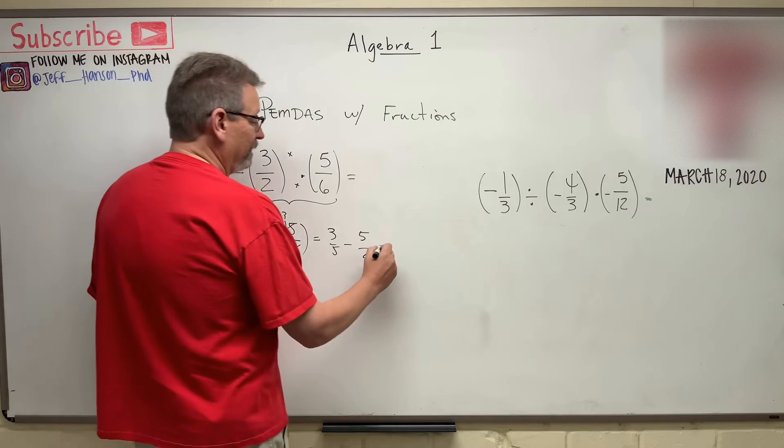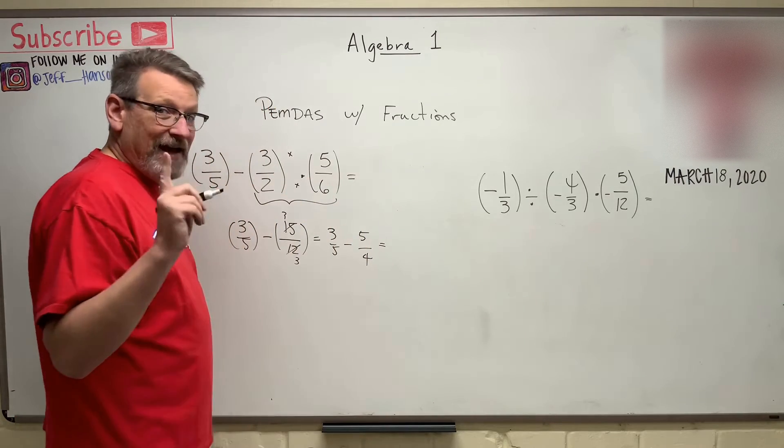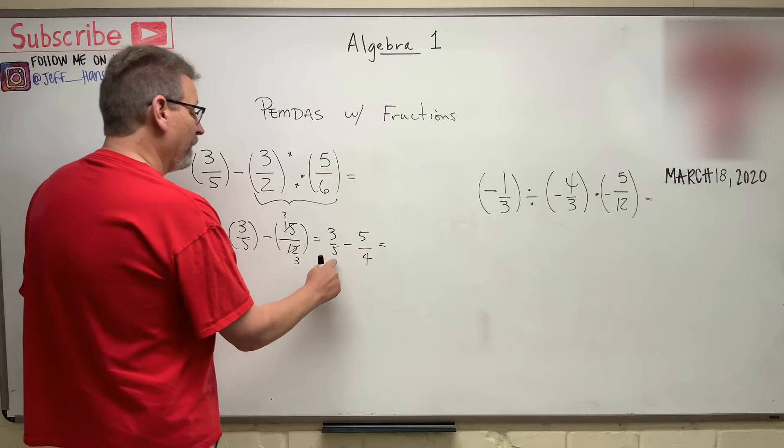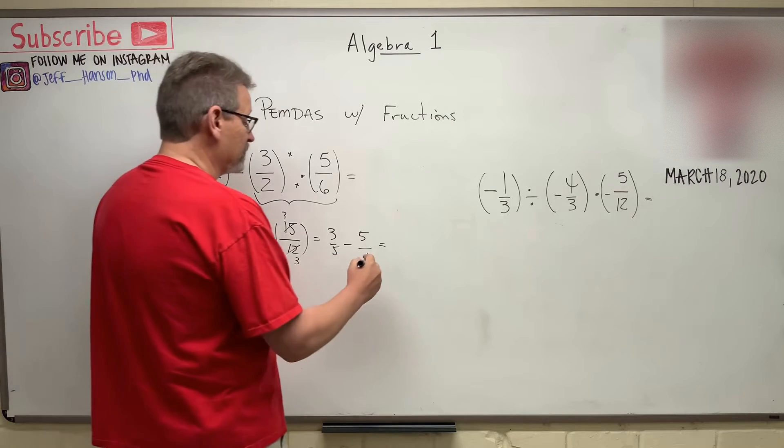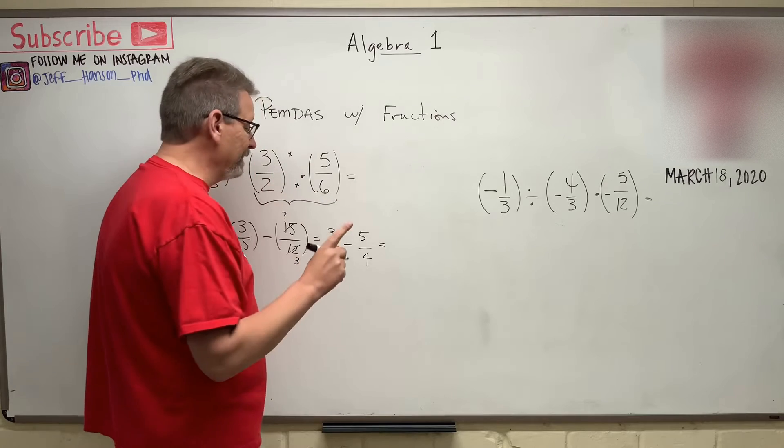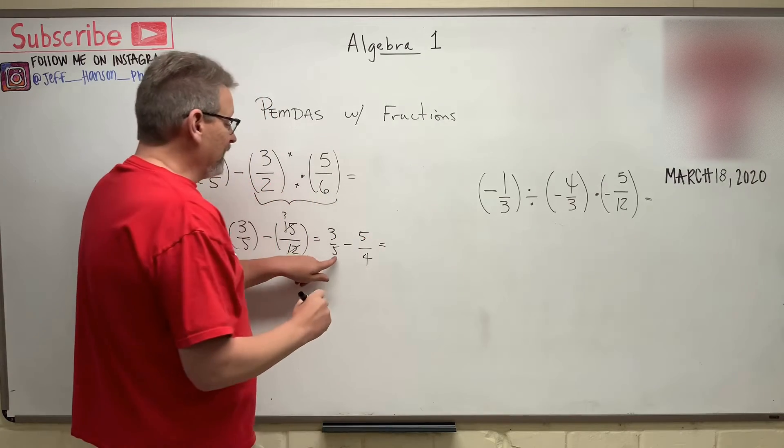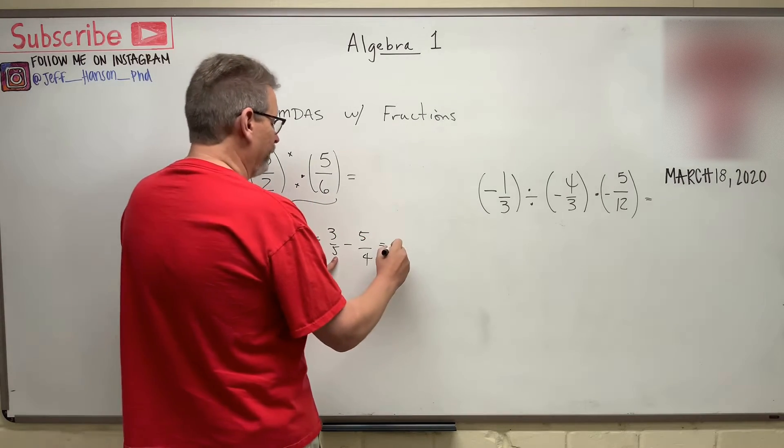How do you do that? You've got to have a common denominator. What's the common denominator between 5 and 4? It's 20 - the least common multiple, the LCM. To get him to 20, I have to multiply him by 4.